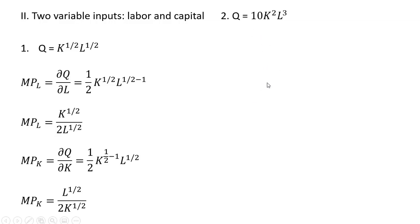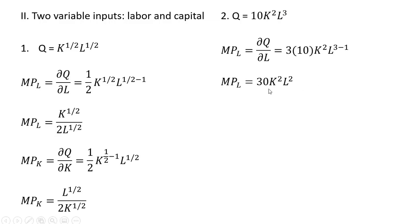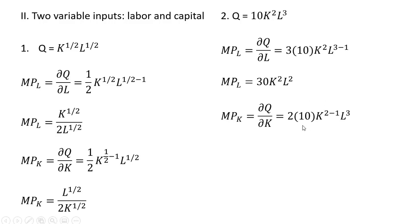Another example. The marginal product of labor: the exponent on the L term comes down in front, and subtracting 1 from that exponent on L gives us 30K squared times L squared as the marginal product of labor. And the marginal product of capital: the 2 on the exponent of the K term comes down in front, subtract 1 from the exponent on K, and you have the marginal product of capital.